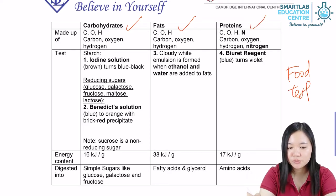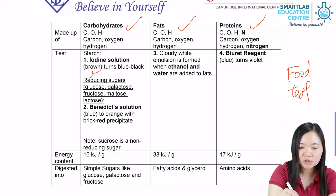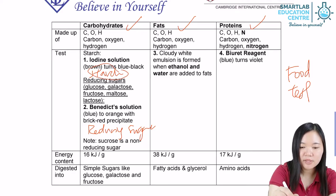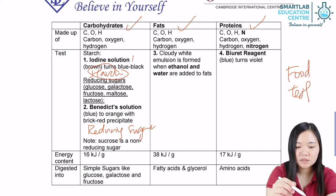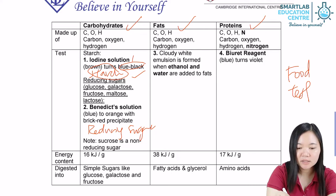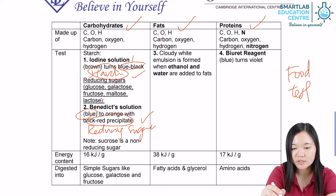For carbohydrates, you can test for two types: you can test for starch and you can test for reducing sugar. To test for starch, you use iodine solution. Iodine solution will turn from brown to blue-black if starch is present. Benedict solution will turn from blue to brick-red precipitate if reducing sugar is present.